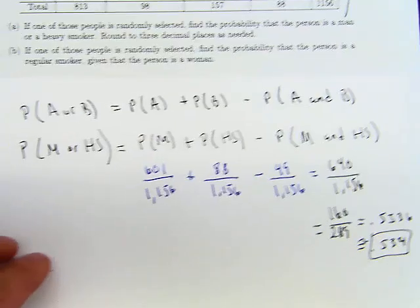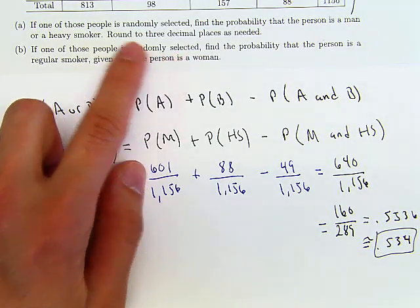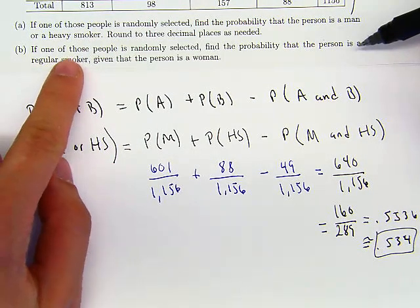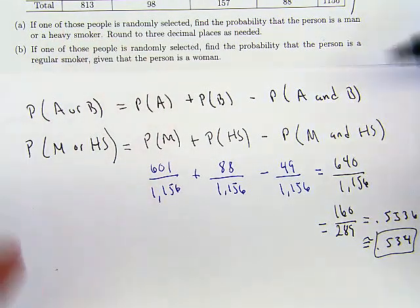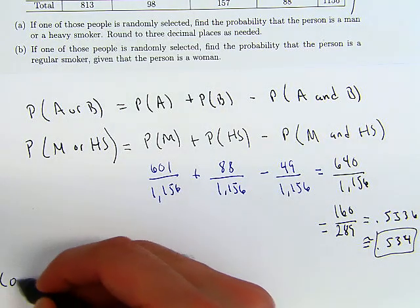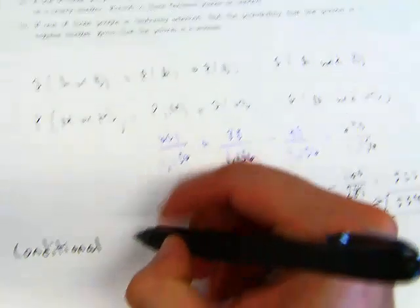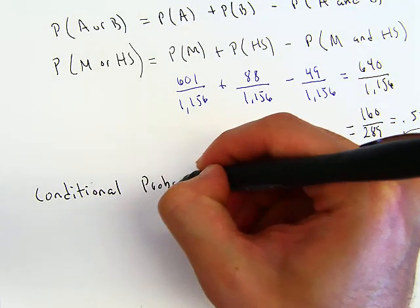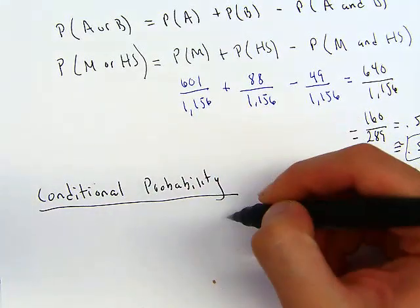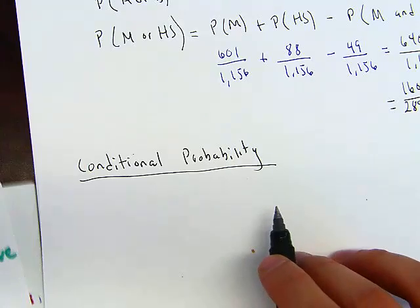The next question says: if one of those people is randomly selected, find the probability that the person is a regular smoker given that the person is a woman. Here we need to use conditional probability. What is the formula for conditional probability?